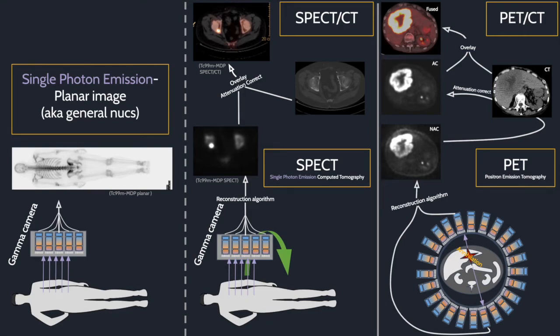This data can then be fused with the anatomical data from the CT to get a PET CT. Remember, PET images image physiology, and the CT images anatomy primarily. Put together, they are a powerful tool.